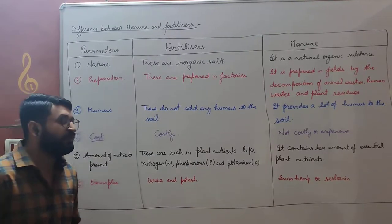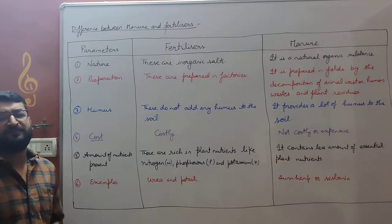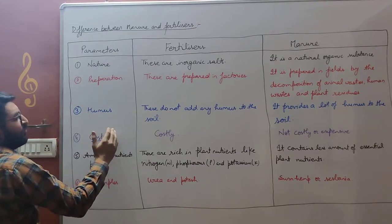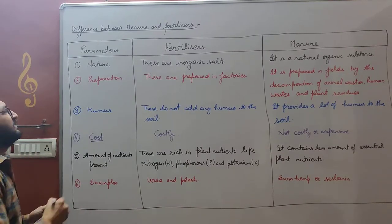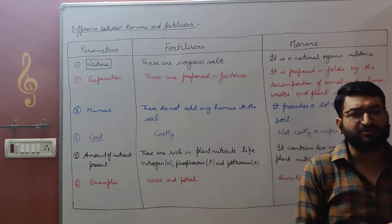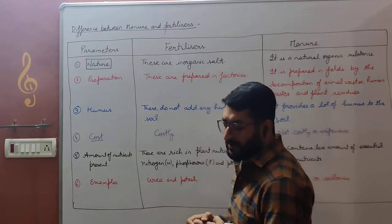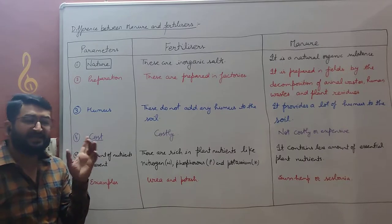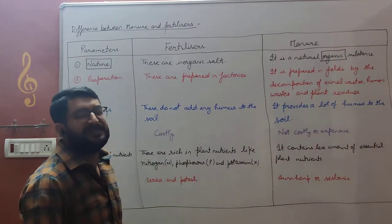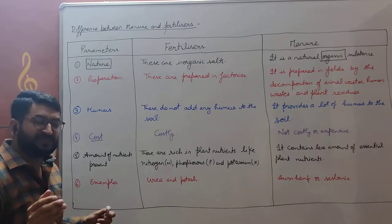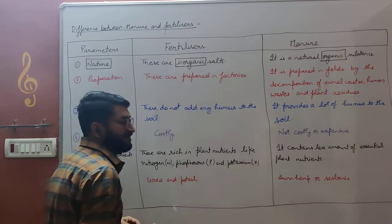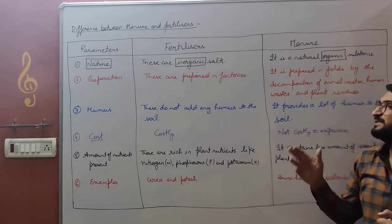Next we will discuss the difference between manure and fertilizers — that is a very important difference. We will decide certain parameters on which we differentiate between them. The first is nature. Compounds which are made up of carbon and its derivatives are known as organic compounds. Manures are natural organic substances, usually composed of carbon and its derivatives. Whereas fertilizers, which are synthesized in industries and factories, are inorganic compounds — compounds other than carbon are inorganic.